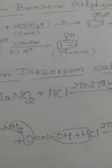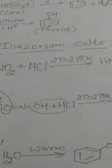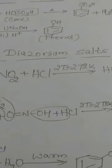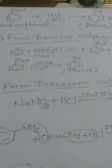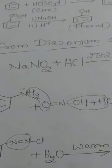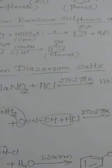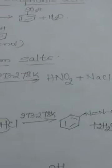The next method of preparation is from diazonium salts. The diazotization reaction was encountered in the topic haloalkanes and haloarenes when discussing Sandmeyer's reaction — kindly recollect it. Diazonium salt is obtained by treating an aromatic primary amine like aniline C6H5NH2 with nitrous acid HNO2. Nitrous acid is prepared by taking sodium nitrite NaNO2 and dilute hydrochloric acid. At a low temperature of 273 to 278 Kelvin, you get HNO2 and NaCl.